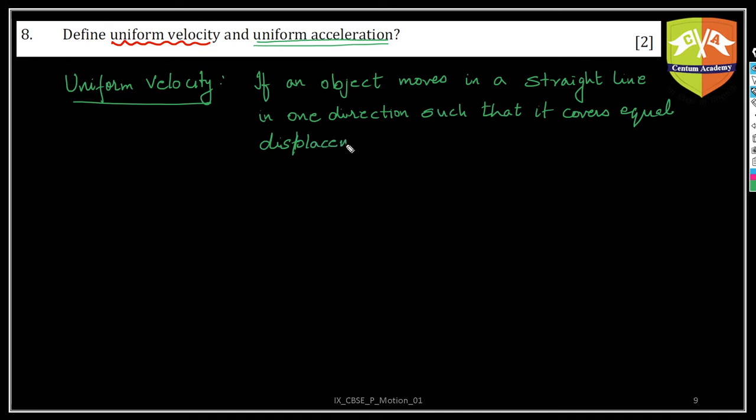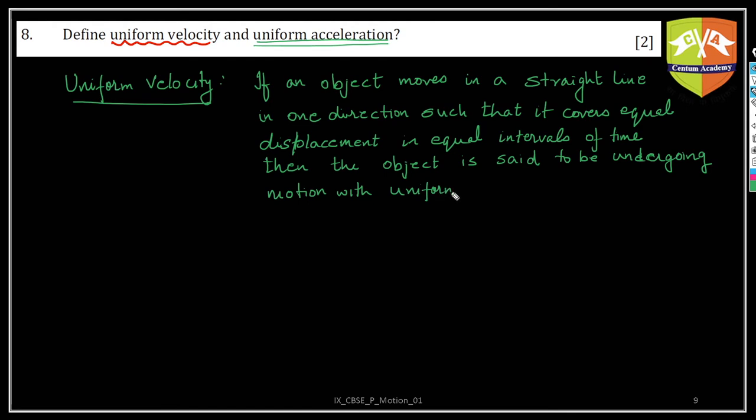It covers equal displacement in equal intervals of time. Then the object is said to be undergoing uniform motion or undergoing motion with uniform velocity. Uniform velocity. And now let's give an example.